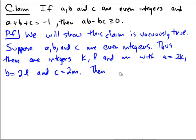Then, what do we notice about a plus b plus c? That would be equal to 2k plus 2l plus 2m, which equals 2 times k plus l plus m, which is even since k plus l plus m is an integer.